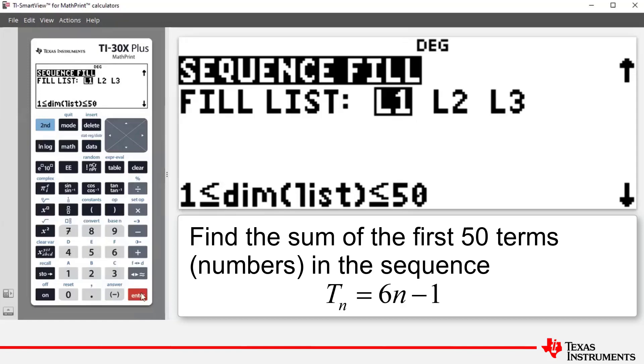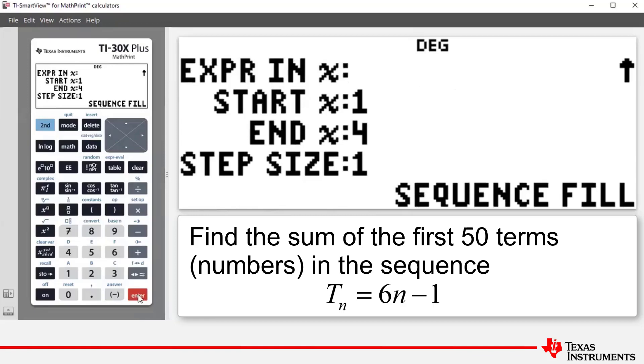So we press enter or by pressing your arrow down we're now going to enter an expression in X. Now our formula in the question was in terms of N so our expression in X is going to be 6 times X minus 1. So we press 6 then we press the variable button to paste X in. Press the subtraction key and then 1 and that's our expression in X.